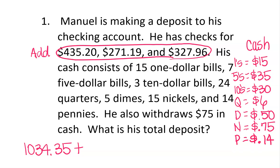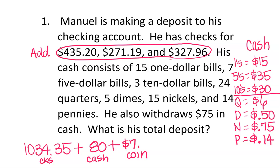To get our total, we start with checks. For the paper money: $15 plus $35 plus $30 equals $80. Then for coins: $6.00 plus $0.50 plus $0.75 plus $0.14 equals $7.39. So our subtotal is $1,034.35 plus $80 plus $7.39, which equals $1,121.74.